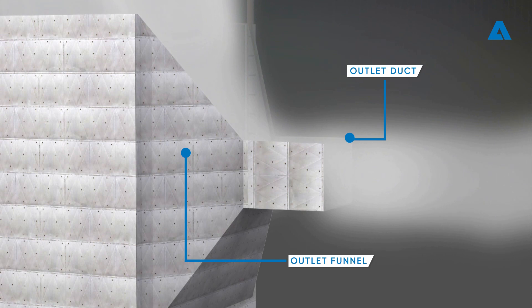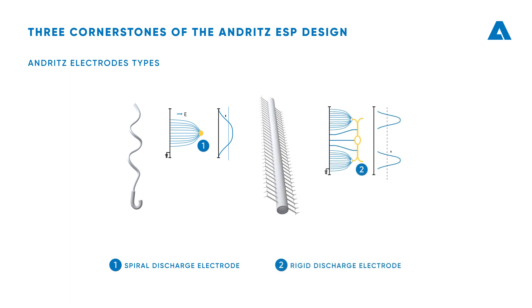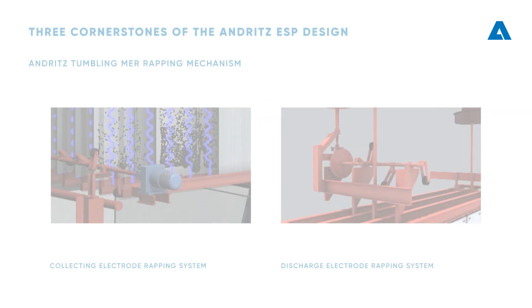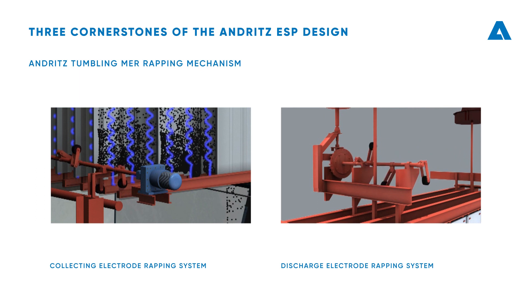The cleaned gas is then removed through the outlet funnel and stack. Anrits employs two types of discharge electrodes: the cost-effective spiral discharge electrode, which ensures uniform corona distribution especially important for high-resistivity applications, and the multi-peak electrode for fine dust applications affected by corona quenching.